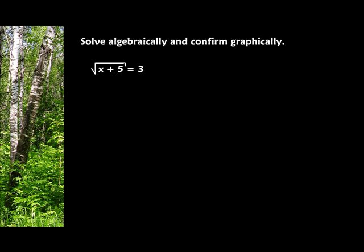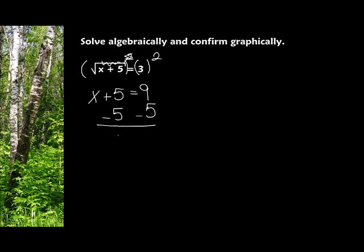Anytime I have a square root, I need to get rid of that. So that means I'm going to square both sides of the equation. When I square a square root, they cancel each other. So I end up with x plus 5 equals 3 squared, which is 9. I'm going to solve for x, so I subtract 5 from both sides of the equation. So I get x equals 4.